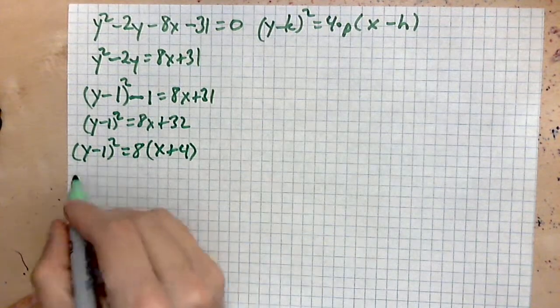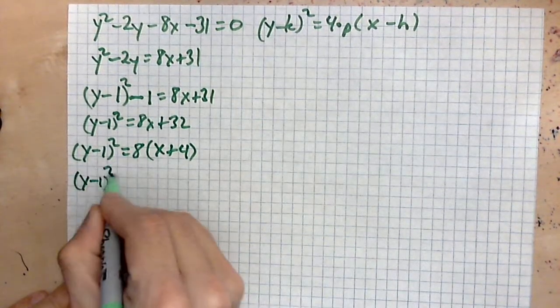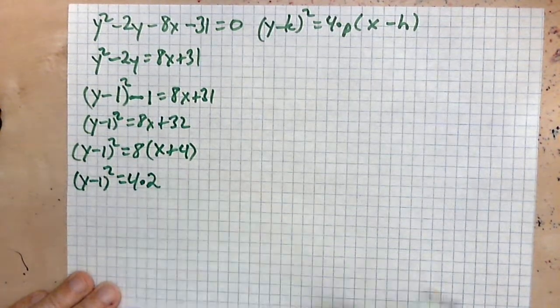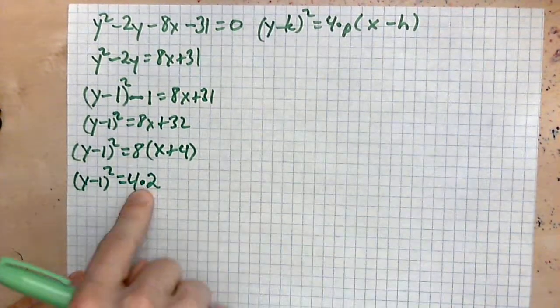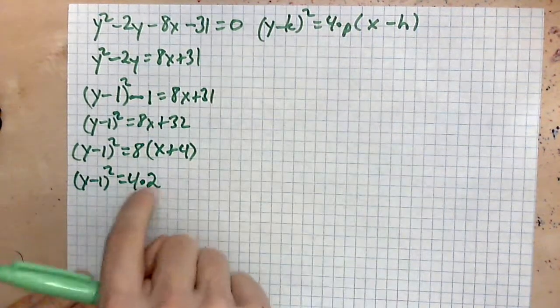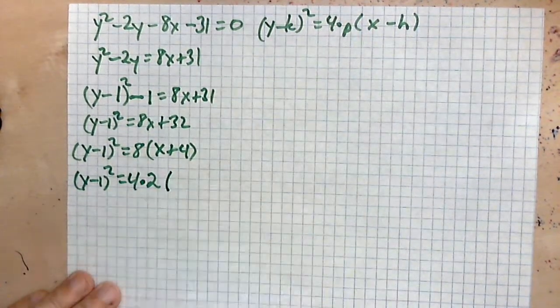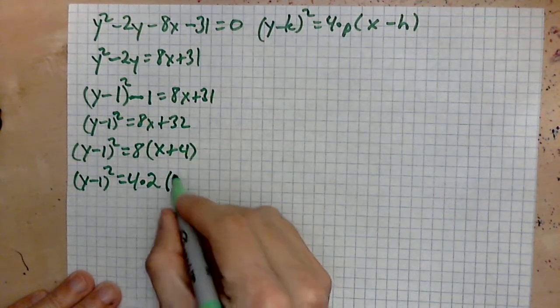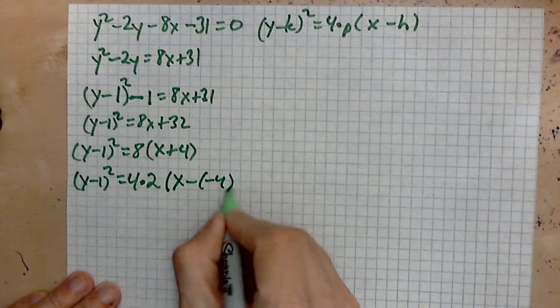After that you write (y - 1) squared equals, rewrite the 8 as 4 times 2. Why? Because you want to make that look like 4 times p, because this shows us the p. The p plays a crucial role. And then x plus negative 4 means x minus negative 4.